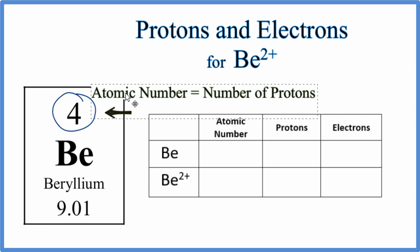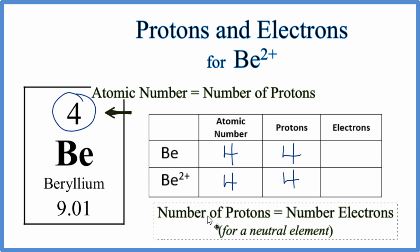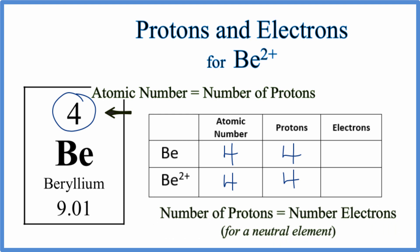The atomic number tells us the number of protons. So for beryllium, the atomic number is 4, which equals the number of protons. When we talk about ions, the only difference is in the electrons — these numbers don't change. The only thing that changes when we have an ion is the number of electrons. To find the number of electrons for neutral beryllium, we need to know that the number of protons equals the number of electrons for a neutral element.